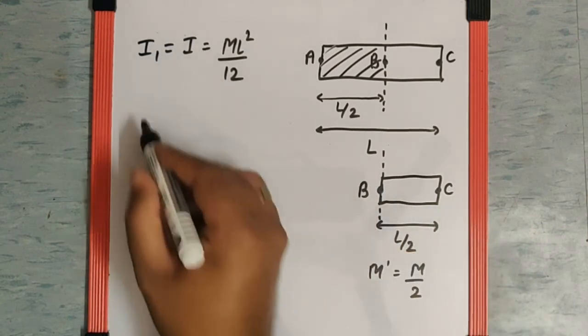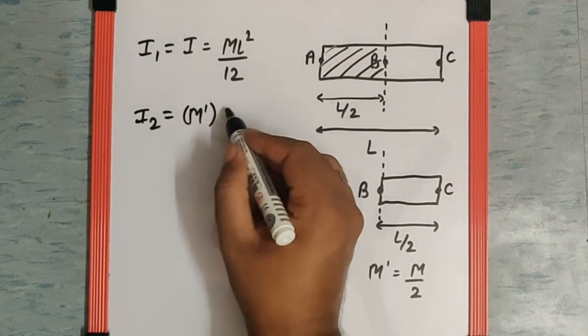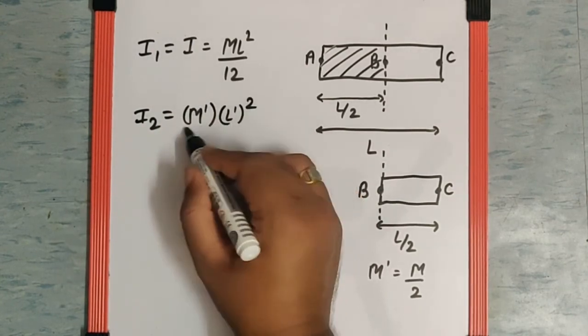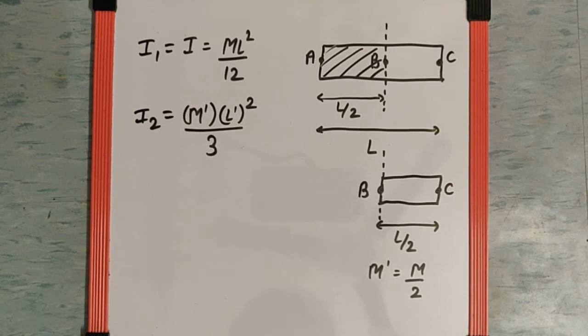So I₂ is going to be M'L'² by 3, which is the standard formula for the moment of inertia for the axis passing through one end of the rod and perpendicular to the rod.